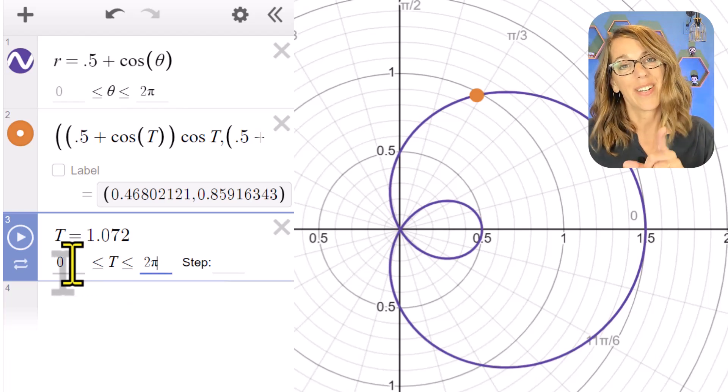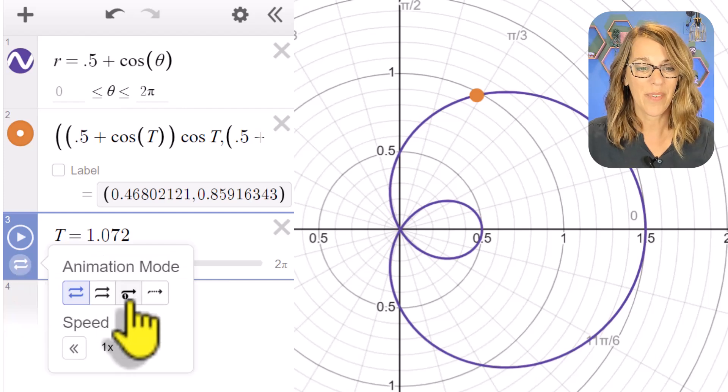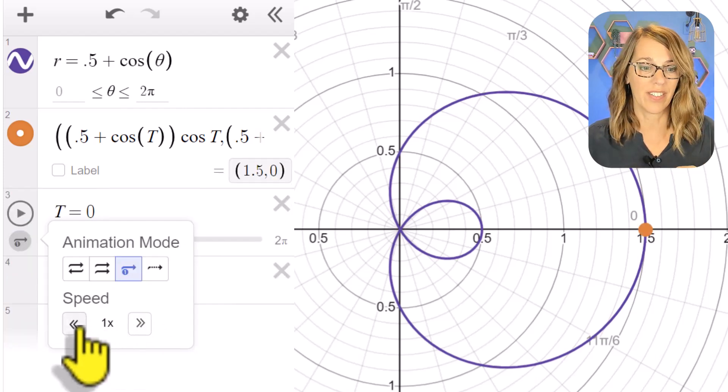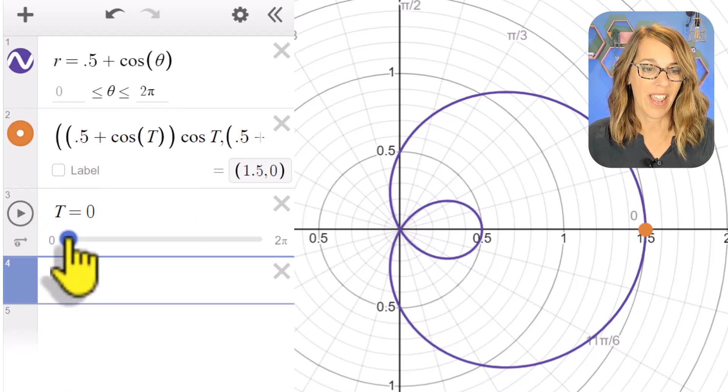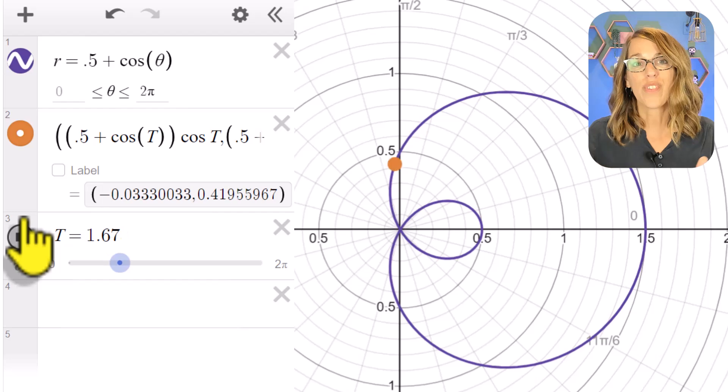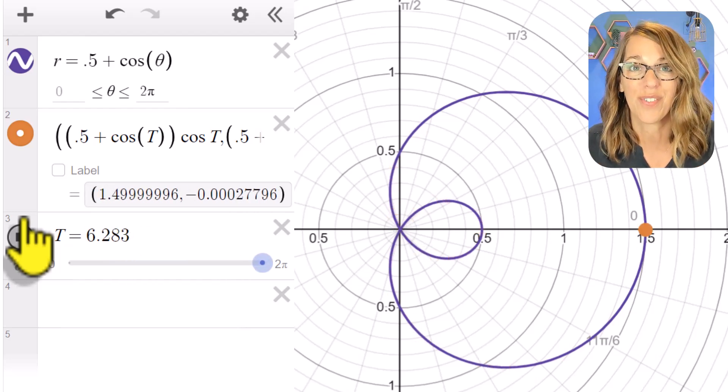I also want to change the animation properties, so I'm going to click on this double arrow, and I want it to run through a single time. We're also going to slow down that speed just a little, so let's back up to 0.75. I've got this back at the beginning, and I'm going to go ahead and push play, and it traces through all of my points as I'm going from 0 to 2π.